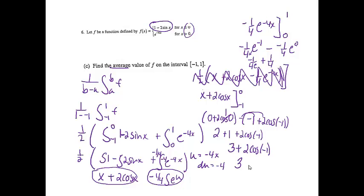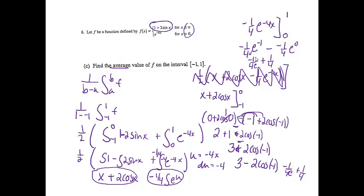Adding the two parts together and accounting for the correction — the minus distributes — we get 3 minus 2 cosine negative 1, minus 1 over 4e, plus 1/4. You could also leave the e to the negative 1 form; that would not be a big deal. Then multiply the whole thing by 1/2, which I had forgotten to apply.